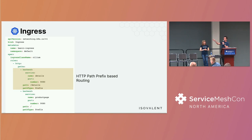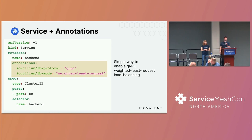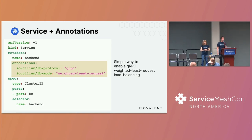Ingress is simply fully conformant — a basic example of path-prefix-based routing, which is exactly what we saw in the demo. For service annotations: some users said Ingress is great, but they really wanted the simplest possible use case for layer 7 load balancing. So we added annotations to Kubernetes services to enable round-robin or least-request gRPC load balancing — all you have to do is annotate your Kubernetes services with two annotations, and you get transparent gRPC load balancing. Very simple.